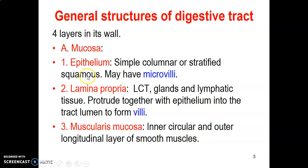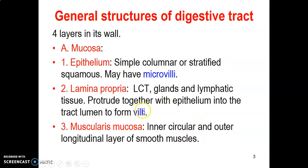The lamina propria is under the epithelium; it contains loose connective tissue, glands, and lymphatic tissue. Loose connective tissue means haphazardly arranged collagen and elastic fibers that are not abundant. There are also mucosal glands, lymphatic tissue, T cells, and B cells. In the small intestine, the lamina propria may protrude together with the overlying epithelium into the lumen to form villi. Villi are the protrusion of the lamina propria and overlying epithelium into the lumen of the small bowel.